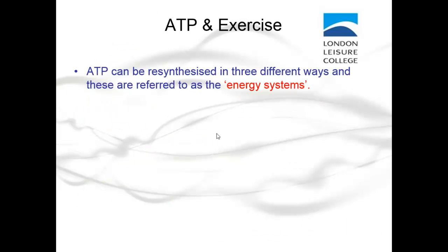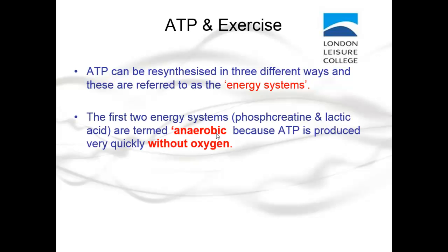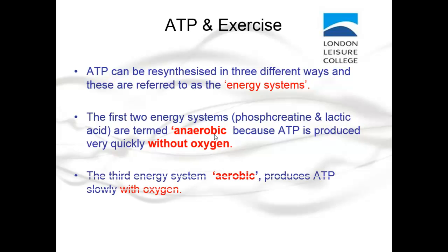ATP can be resynthesized in three different ways, referred to as the energy systems. The first two — phosphocreatine and lactic acid — are termed anaerobic because ATP is produced very quickly without oxygen. The third energy system, aerobic, produces ATP slowly with oxygen.